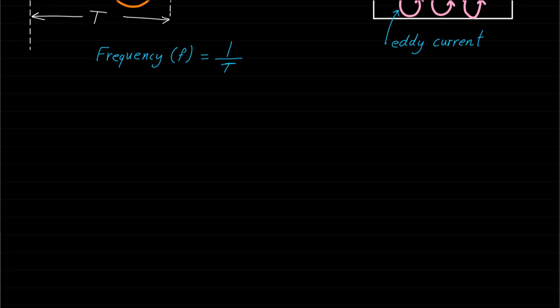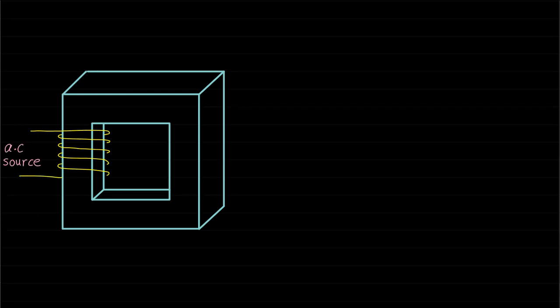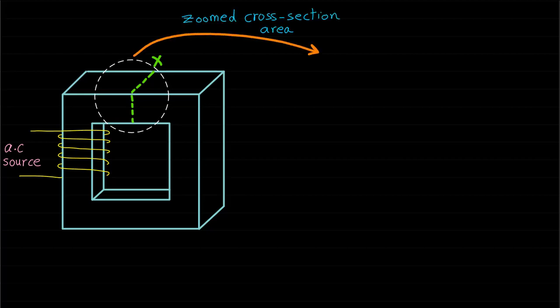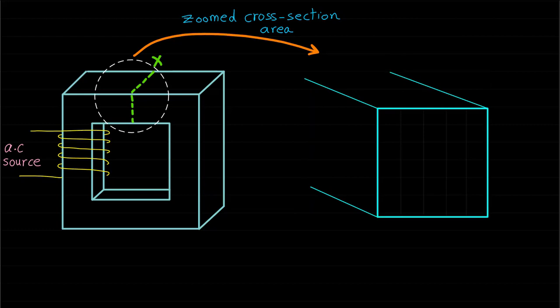Now let's give more details. Assume we have the following magnetic circuit and it is supplied by an AC source. Let's cut the core at point x and look at the zoomed-in cross-sectional area of the core. When the magnetic field phi is changing or increasing at a certain time, assume in the following direction.